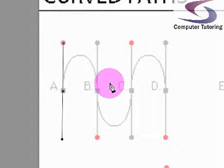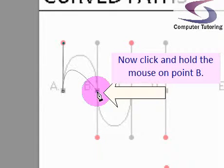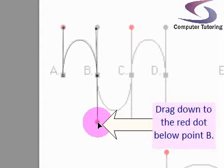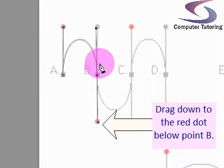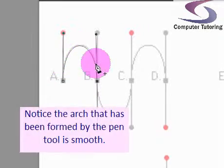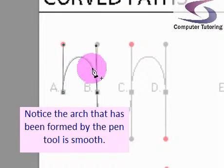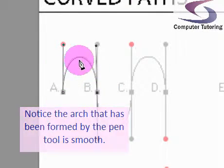Let's do the B point. So go to the B, click and hold the mouse button down, drag down to the red dot, let go. And notice the arc. So you can see that the pen tool has automatically joined the arc between the A and the B.